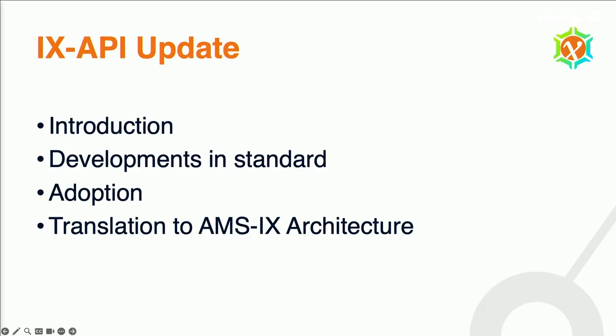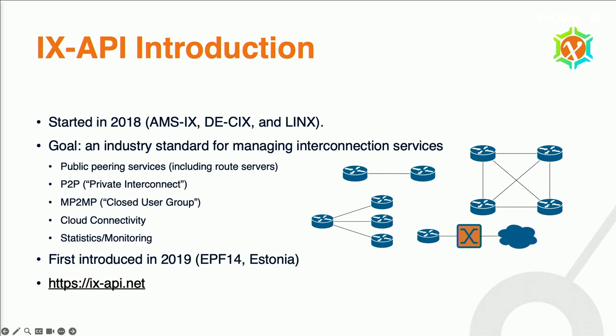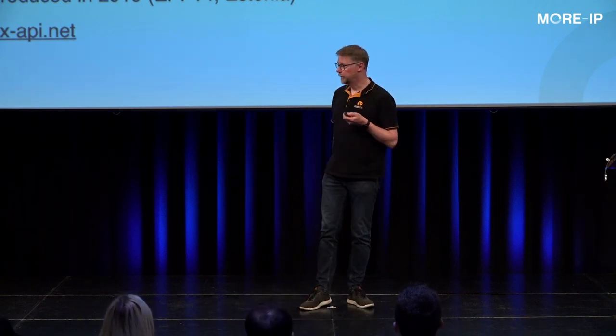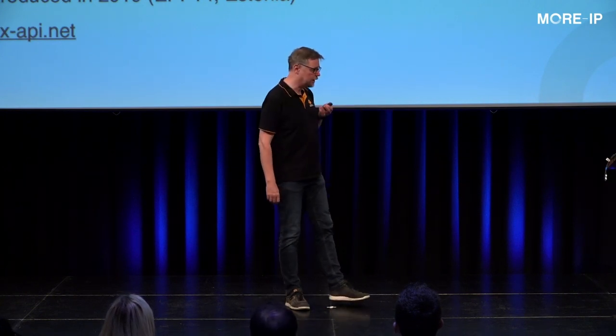A little bit about IX API. I stood here last year giving a similar update, so I was wondering what can we say that hasn't already been said about this. This is an effort that was started in 2018 when M6, D-Kicks, and Lynx realized that we were all kind of struggling with automation. We got requests from multiple parties that they would like to automatically provision and configure things on our platform, and they would like to use one single API for that instead of constantly developing new things for each IX separately.